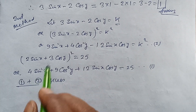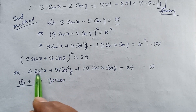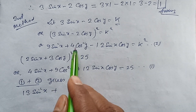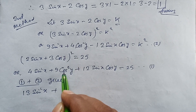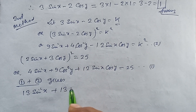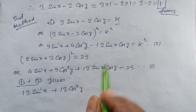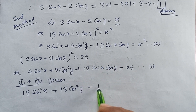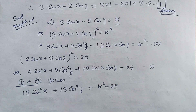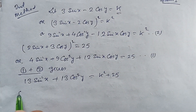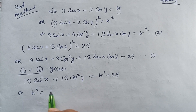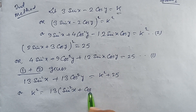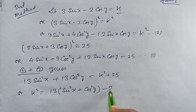Continuing the algebraic manipulation: combining terms with sin x and cos squared y, we get an expression equal to k squared plus 25, leading to 3 sin x plus 2 cos squared y minus 25.